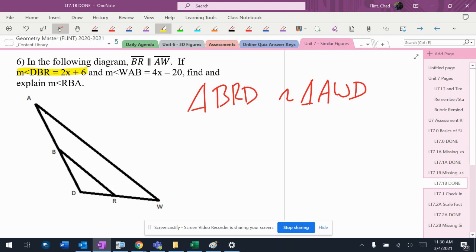So look at the angles. DBR is right there, WAB is right there. Those are corresponding angles from the parallel lines. Corresponding angles are equal, which means yellow equals green.